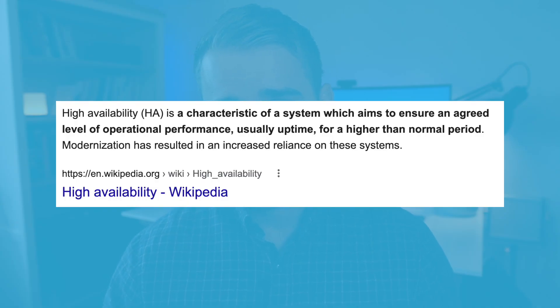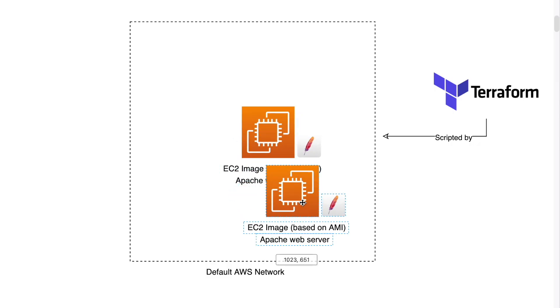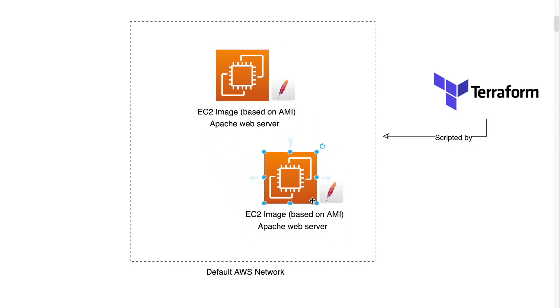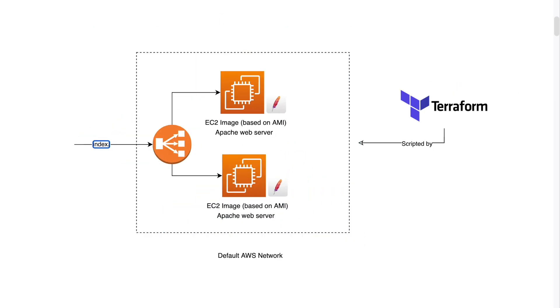Step four is where we get into high availability. It's quite crude to have a single machine because if anything goes wrong your site goes down. Nowadays it's simple to set up high availability — take your first instance, create a second identical one, then set up a load balancer to balance traffic between them. If you switch off one machine, the other should take over.